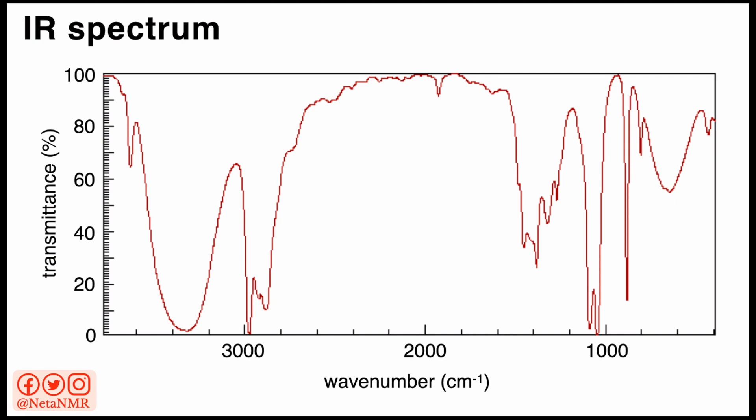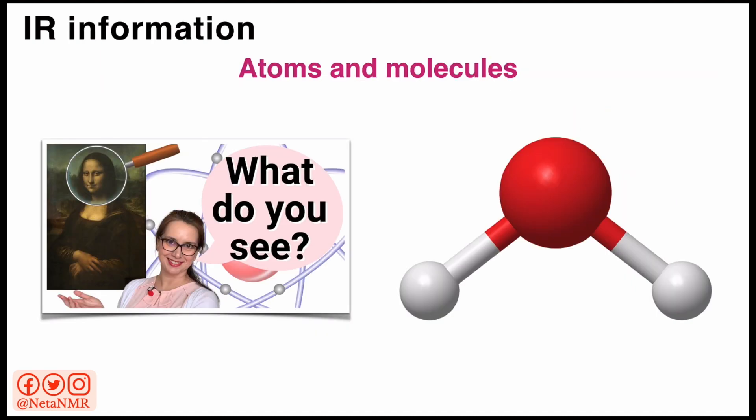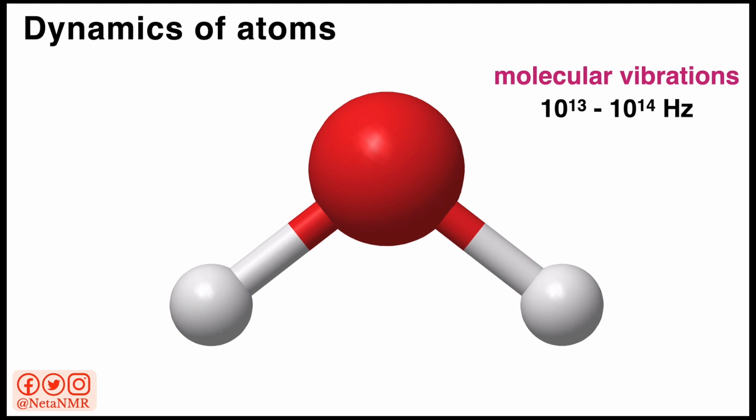Here is an example of an infrared spectrum. In order to understand what are all these lines that we see here, we have to go back to atoms and molecules. In a previous video, which I'll link in the description, we've seen how atoms come together to form molecules. But these atoms are not static — they are dynamic, and the molecular vibrations are really really fast, in the order of 10¹³ to 10¹⁴ hertz.